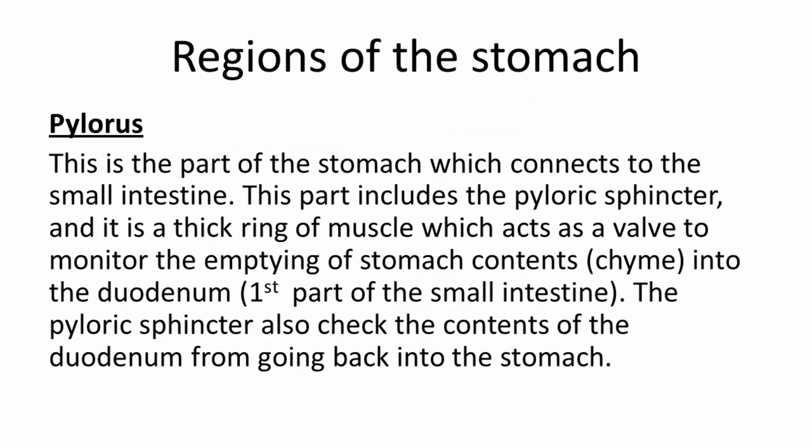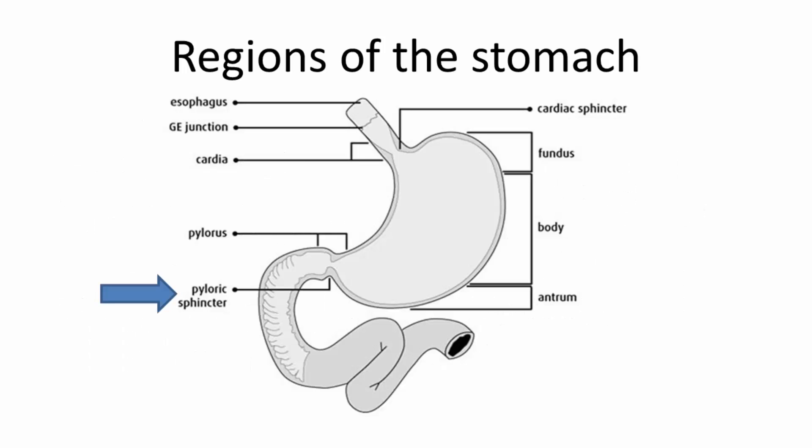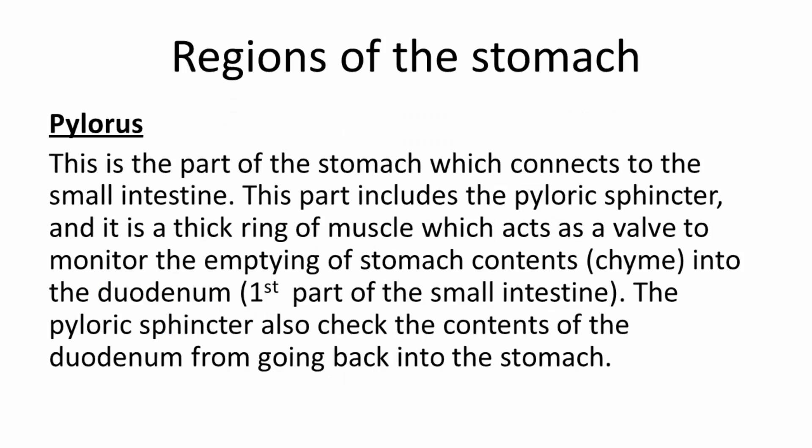The fifth region is the pylorus, the part of the stomach which connects to the small intestine. This part includes the pyloric sphincter — a thick ring of muscle that acts as a valve to monitor the emptying of stomach contents into the duodenum, the first part of the small intestine. The pyloric sphincter also prevents contents of the duodenum from going back into the stomach.